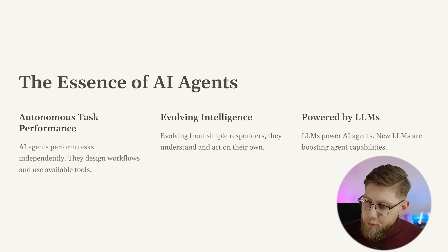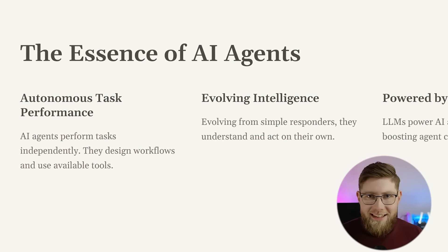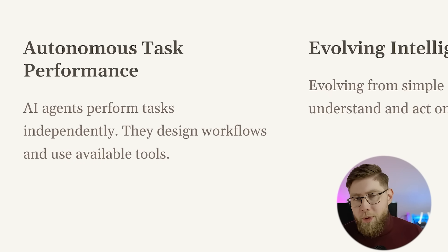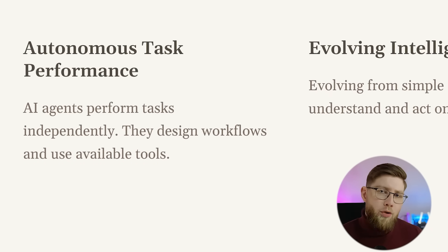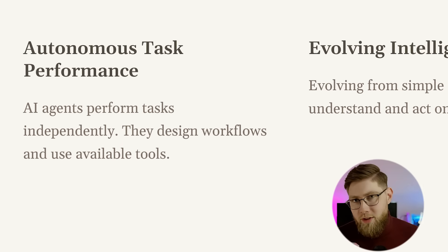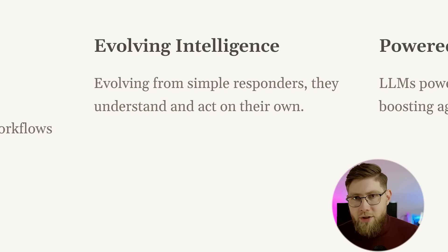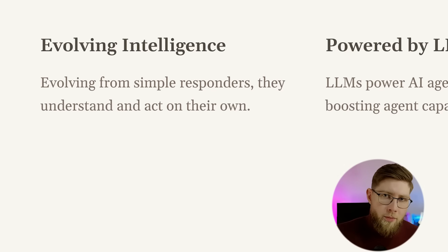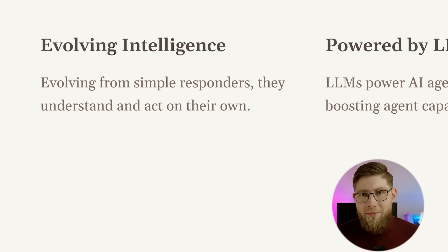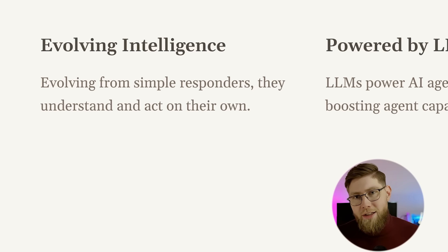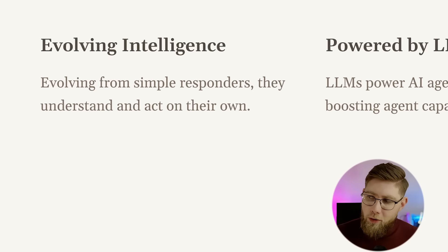Let's explore this deeper. Autonomous task performance — this is big. Some people refer to AI agents also as autonomous agents, because they can autonomously perform given tasks. Second, evolving intelligence. This is AI evolved from simple responders to a system that can reason, understand context, use given tools, to reach a given or defined goal.